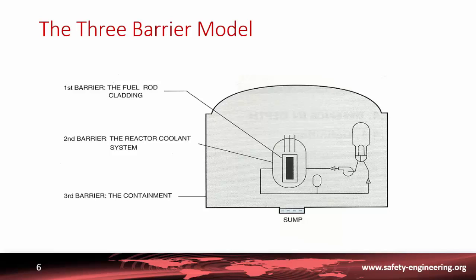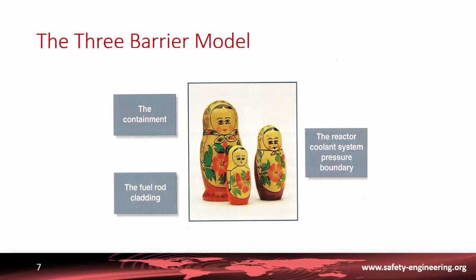Another way of presenting the defense in depth concept is the three-barrier model. The idea is to have three different leak-tight barriers between the radioactive products produced by fission inside the fuel and the environment: the first being the fuel rod itself and its cladding, the second being the reactor coolant system, and the third the containment. This is illustrated by the Russian doll model, where each barrier is inserted inside the other.